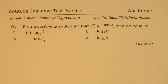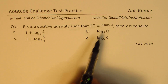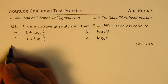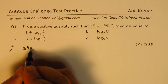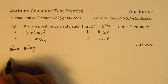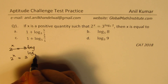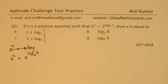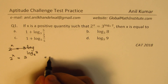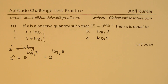Question number one: if x is a positive quantity such that 2 to the power of x equals 3 to the power of log base 5 of 2, then x is equal to what? We are given that 2 to the power of x is equal to 3 to the power of log to the base 5 of 2. Now if you remember the properties, we can swap these two, so it becomes 2 to the power of log base 5 of 3.